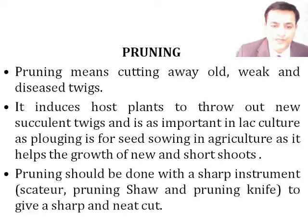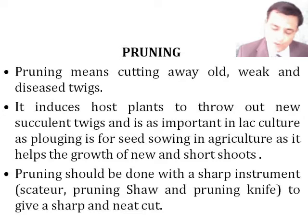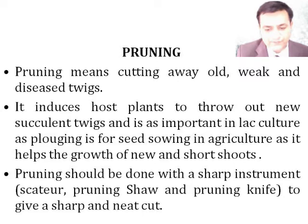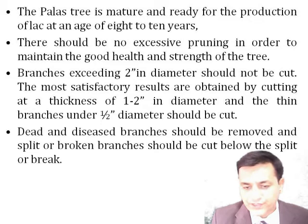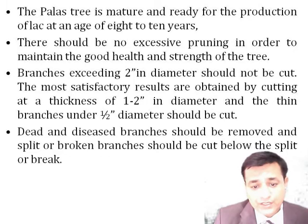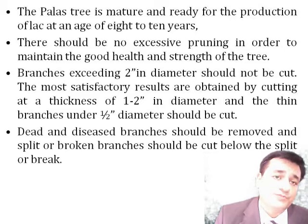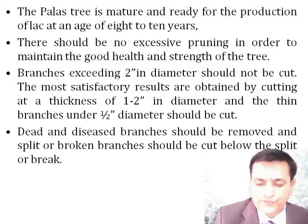Pruning means removal of old and diseased twigs. Just as seed sowing is a very important step in agriculture, pruning is the first and most important step in lac cultivation. Pruning should be done with sharp instruments like a hacksaw, pruning shear, and pruning knife. In palash trees, production of lac can be started at the age of 8 to 10 years. There should be no excessive pruning to maintain the health and strength of the tree. Branches exceeding two inches in diameter should not be cut; satisfactory results are obtained by cutting branches of approximately one to two inches in diameter. Thin branches under half an inch in diameter should be removed. The normal time of pruning is January to February and April to May.